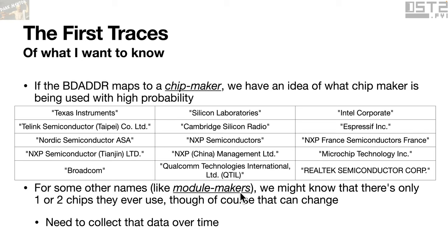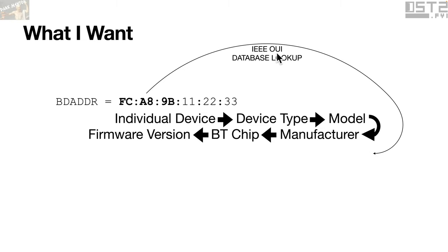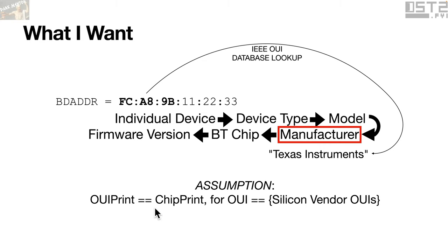Sometimes you'll get something that maps to a module maker, but we can figure out what set of chips module makers actually use by collecting data over time and scraping their website. So: I really want firmware version. What I have is something like a BD Adder. Looking at the OUI from the beginning, I can do an IEEE OUI database lookup, which might give me a manufacturer. I make the assumption that if we have an OUI print being a silicon vendor, that will be the same thing for an actual chip print — you'll see an example later where this isn't true, but it seems to hold most of the time.